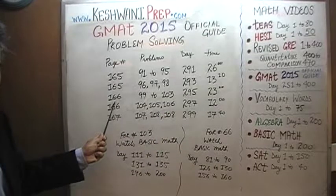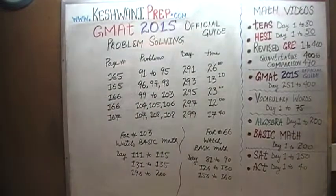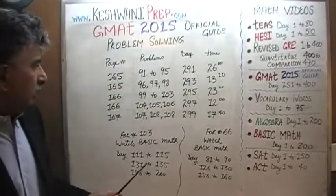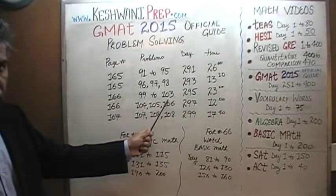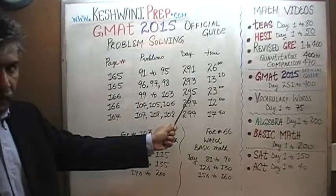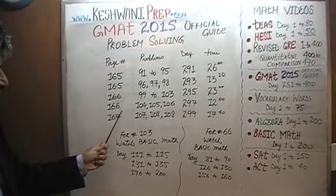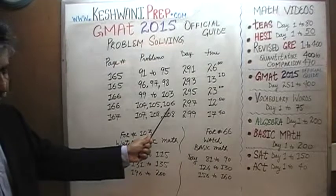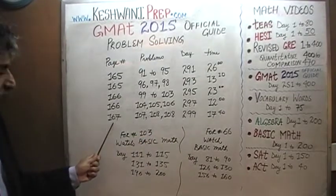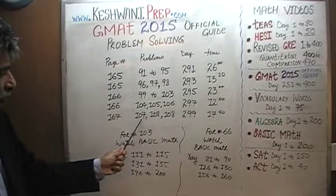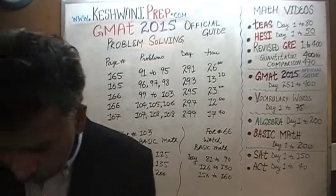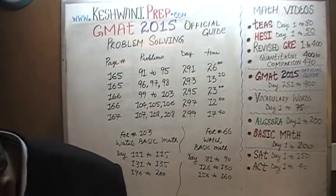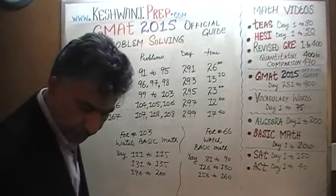On page 166, problems 104, 105, and 106 were done on day number 297. On the next page, page 167, you will find the solutions to problems 106, 108, and 109. And those problems were done on day number 207.